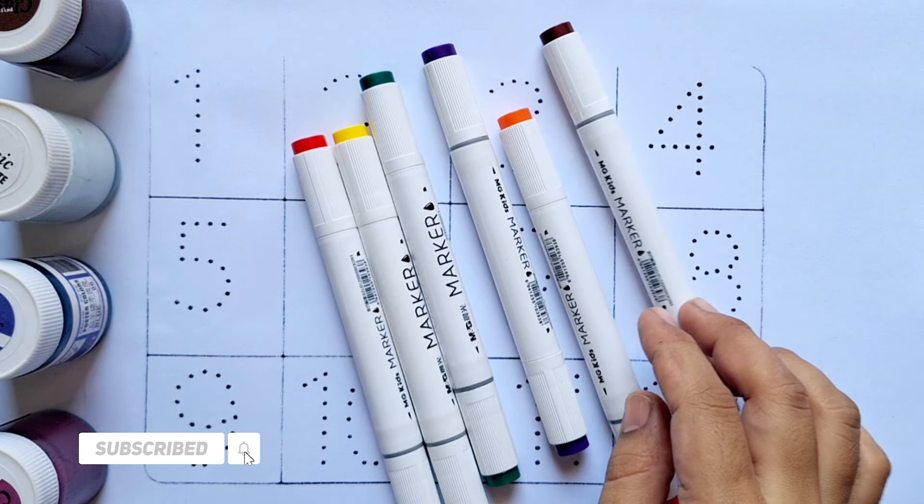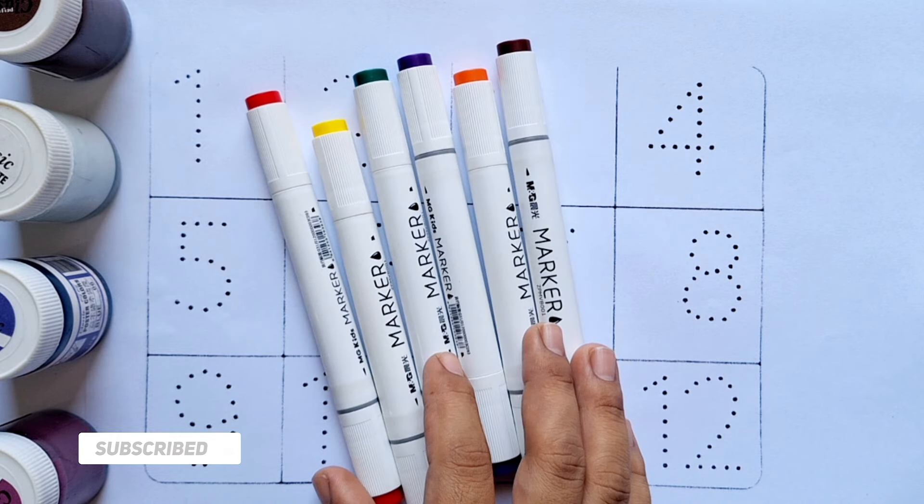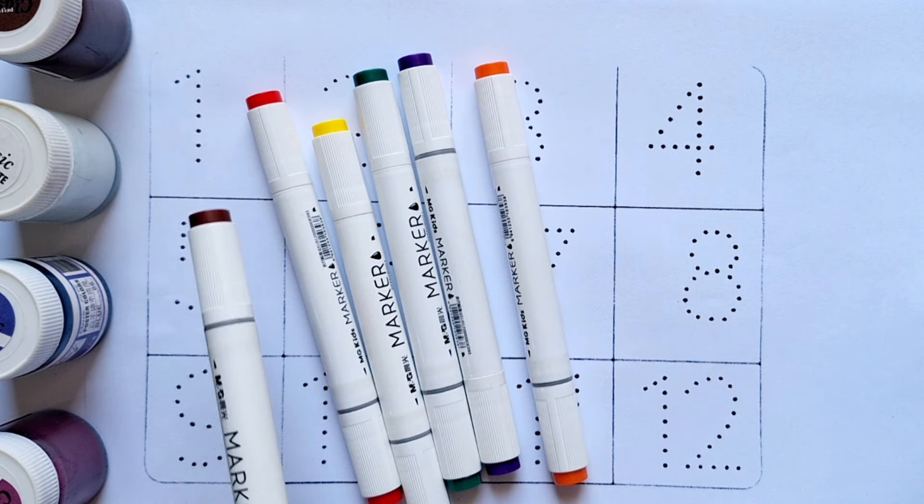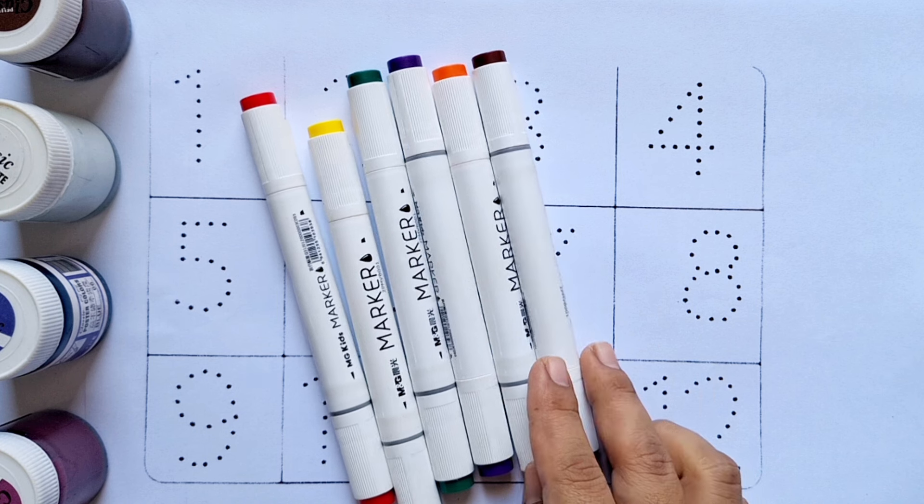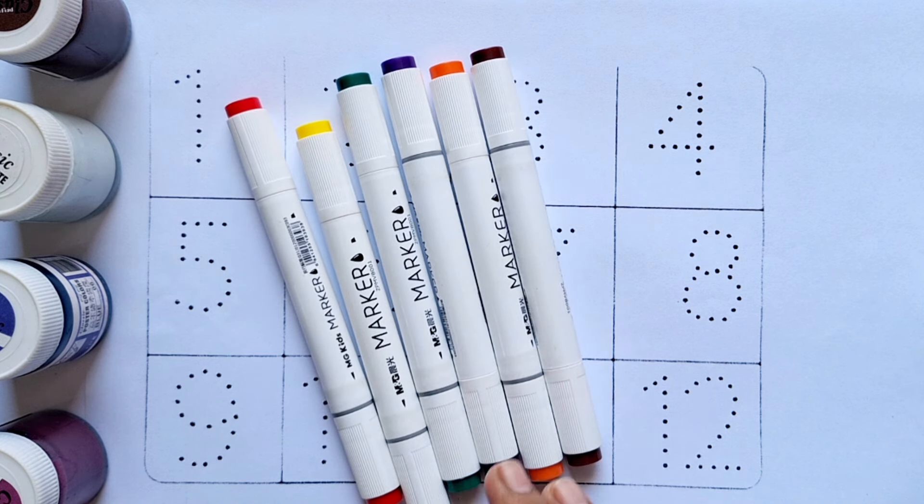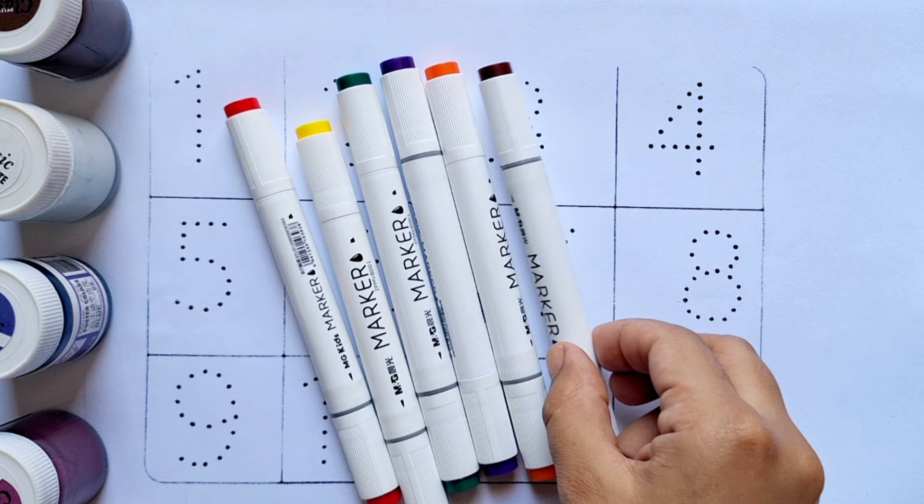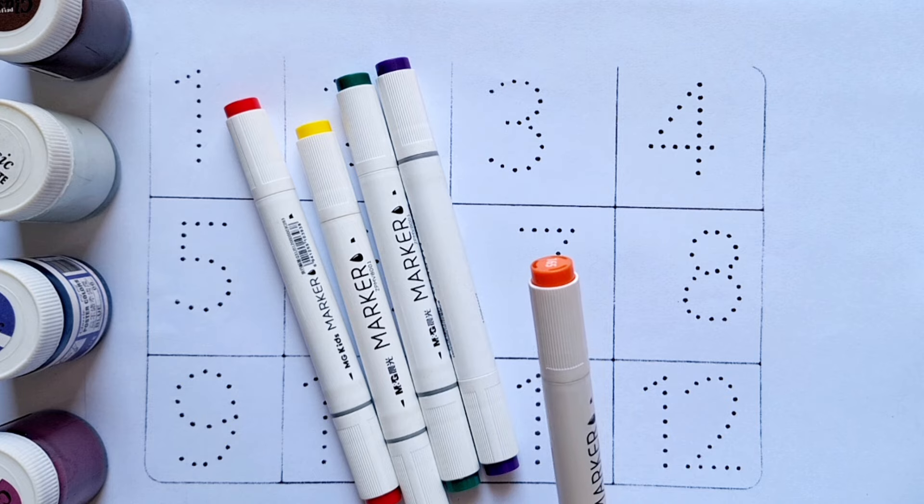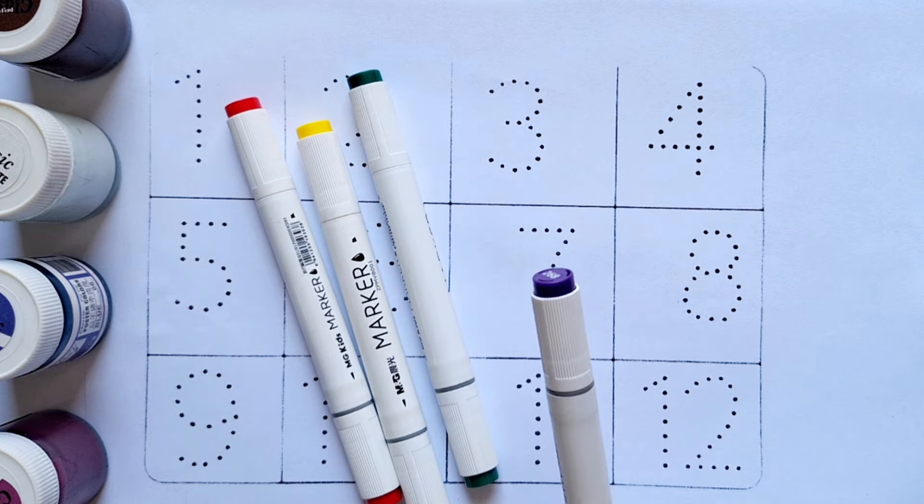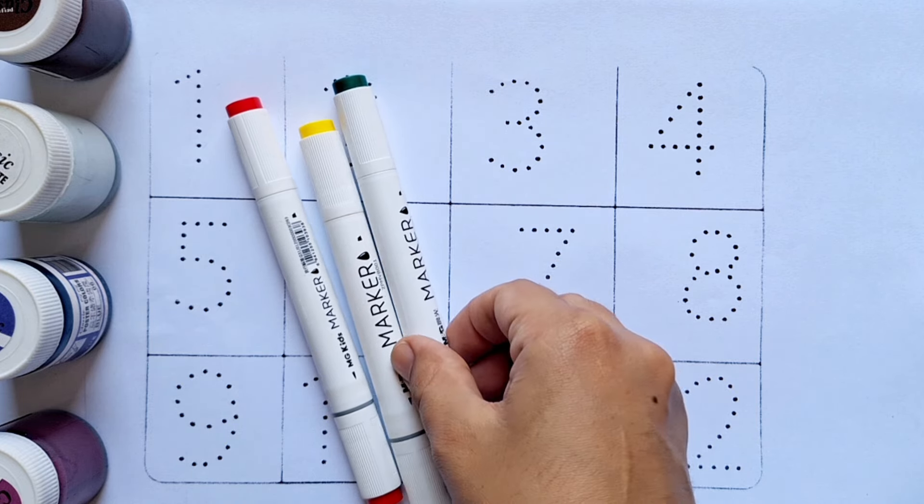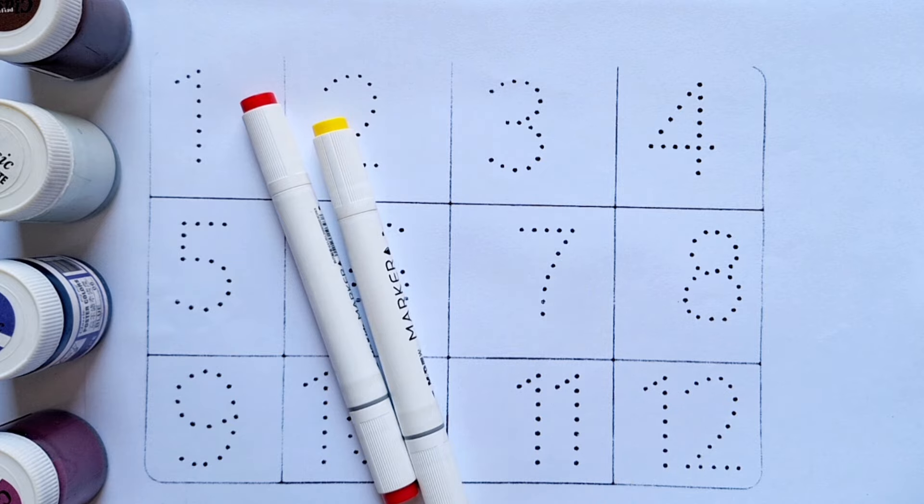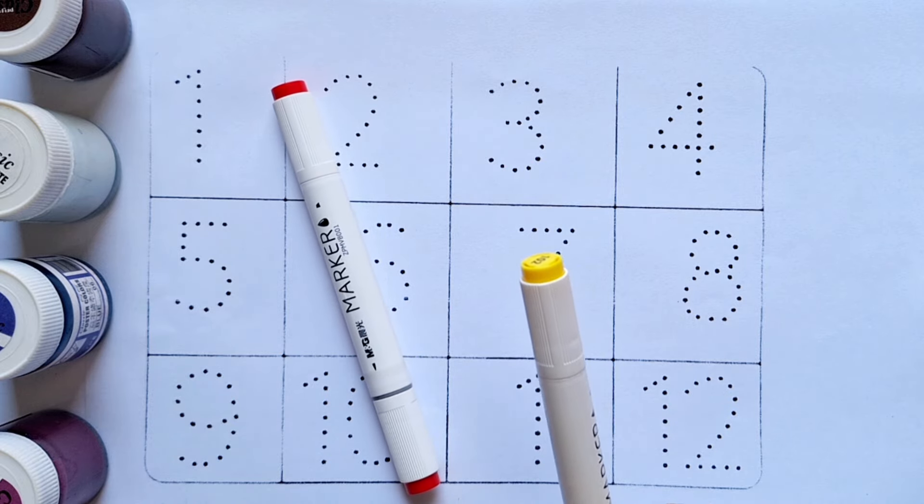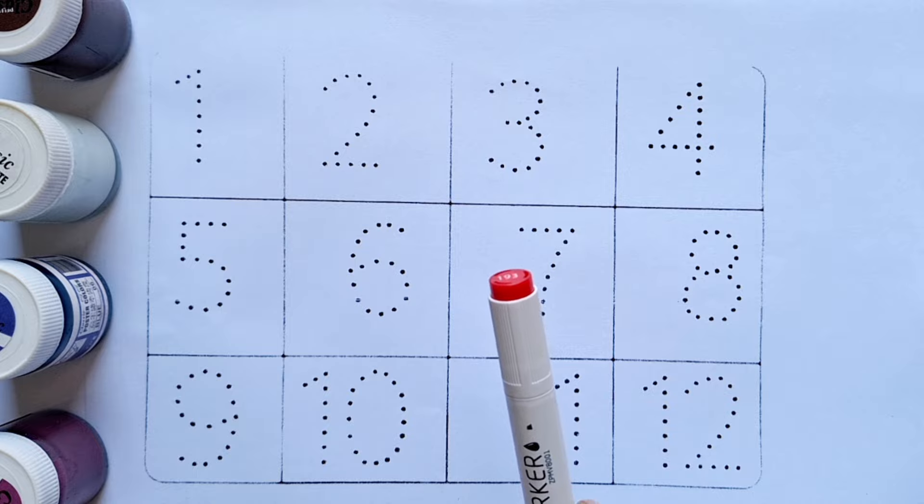Hey there awesome kids! In today's video I'm going to teach you counting from 1 to 12. Are you ready? Let's get started! But first, let's learn some color names: brown, orange, purple, dark green, yellow, red.